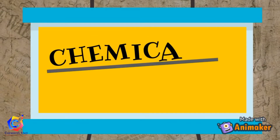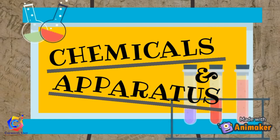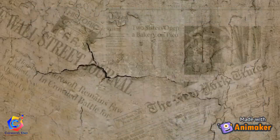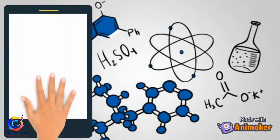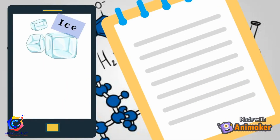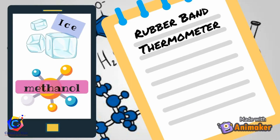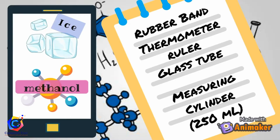Now let us go over all the chemicals and apparatus for Part A of this experiment. For the chemicals, we need ice and methanol. While for the apparatus, we are going to need a rubber band, thermometer, ruler, glass tube, and a 250 milliliter measuring cylinder.